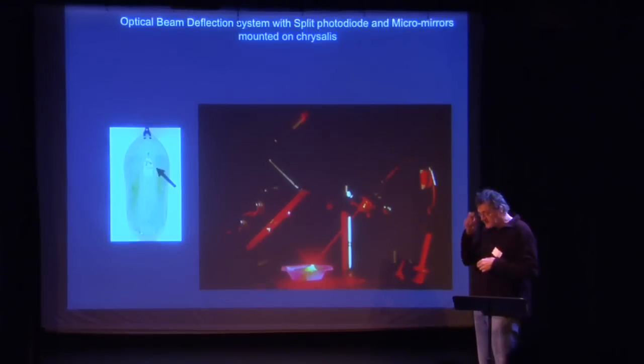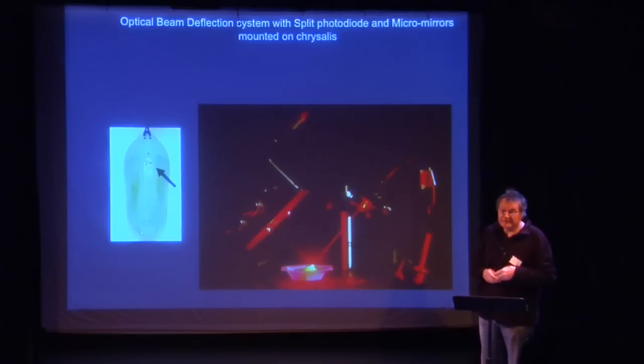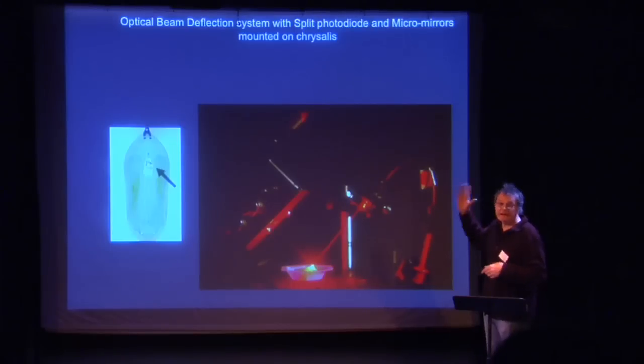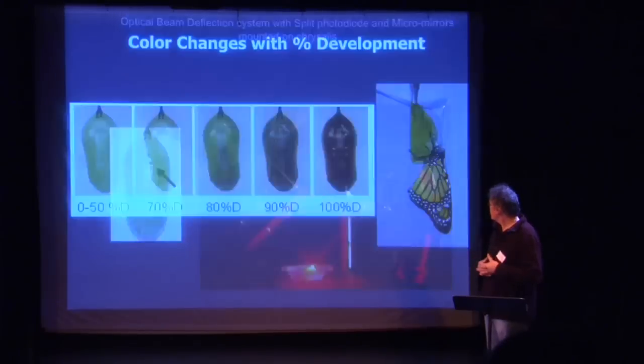She had a friend, Richard Stringer, who has a butterfly farm in Florida, and he sent me some pupae. This one is the monarch butterfly. We started with a painted lady. We attached, where you see that little dot, a tiny mirror on it, and then we looked at how a laser would move back and forward to record the motion of the pupa.